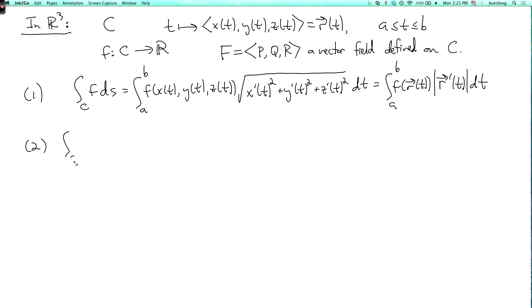And then we have integral over C of f dx is the integral from a to b of f(R(t)) times x'(t) dt. And then integral over C of f dy is defined the same way except you have y'(t). Now we can also do an integral with respect to z, so you can guess how this is going to go. It's f(R(t)) z'(t) dt.